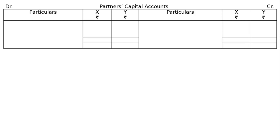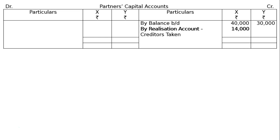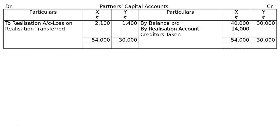Now the partners capital accounts for X and Y. Credit side: by balance brought down — X rupees 40,000, Y rupees 30,000; by realization account for creditors taken over by X rupees 14,000. Debit side: loss on realization transferred — X rupees 2,100, Y rupees 1,400. Total from the credit side: X rupees 54,000, Y rupees 30,000. Finding the final payment to X and Y: to cash account — X rupees 51,900, Y rupees 28,600.